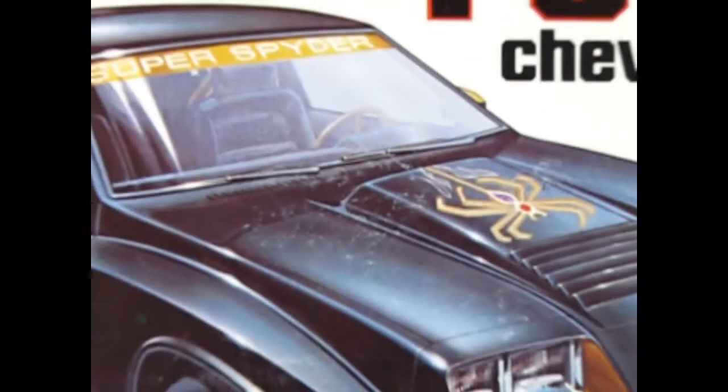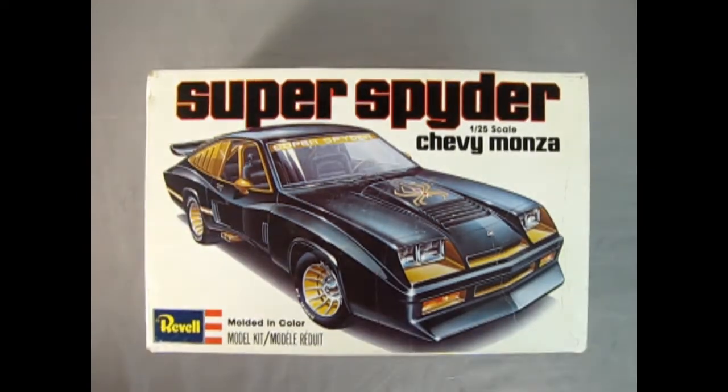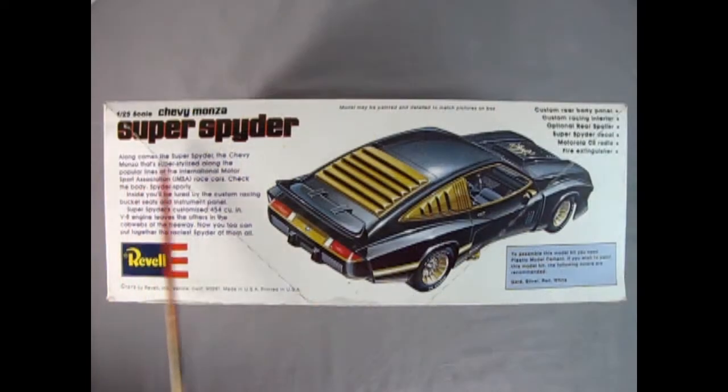Where I can show you where to buy some really cool model car kits. Okay then, let's get unboxing. Once again we head all the way back to our Chevy showroom for 1978 where we see the amazing Chevy Monza Super Spider. The Revell Chevy Monza Super Spider is a 1:25 scale model kit molded in color.